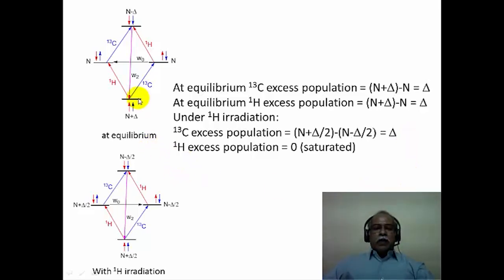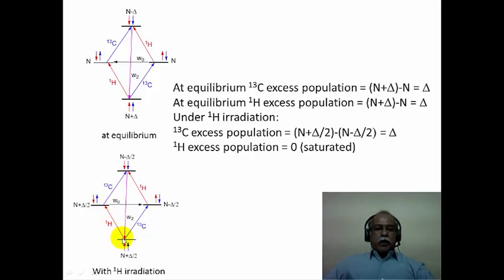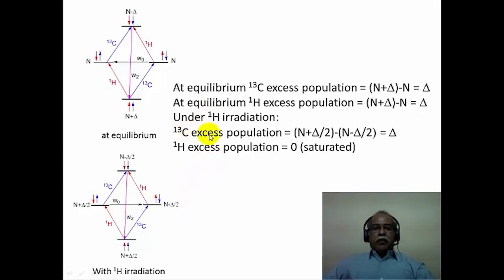When the proton is irradiated—applying a second radio frequency at the proton resonance frequency—the proton spins get excited to the higher state such that the population between the two proton levels becomes nearly equal, i.e., saturation. In the presence of proton irradiation, the carbon-13 excess population corresponds to δ, while the excess proton population becomes zero due to saturation.